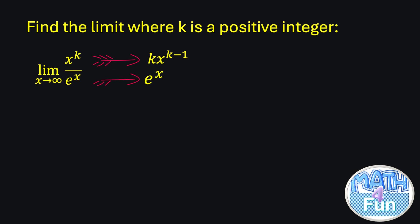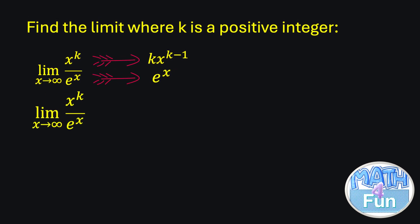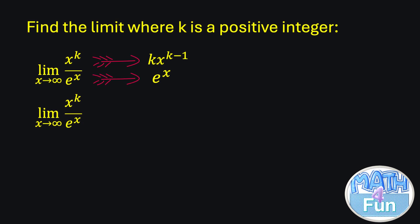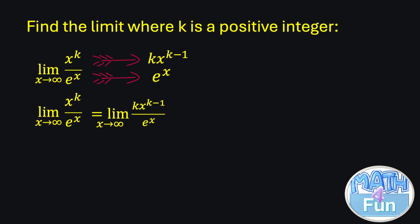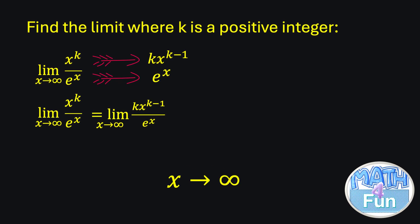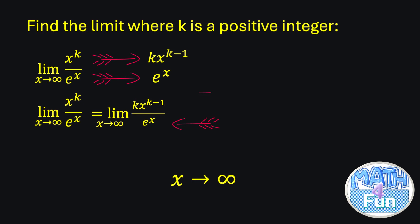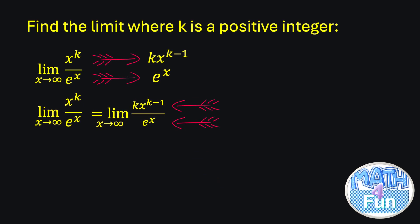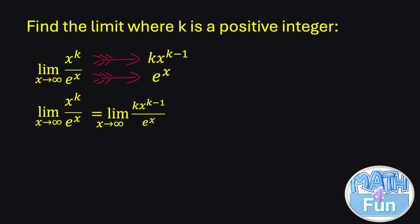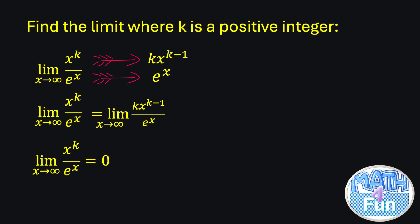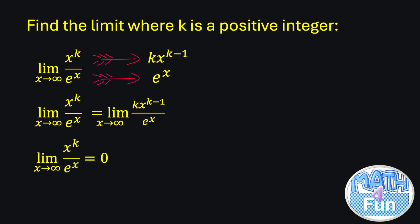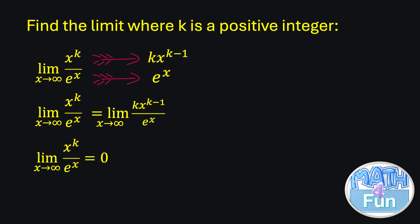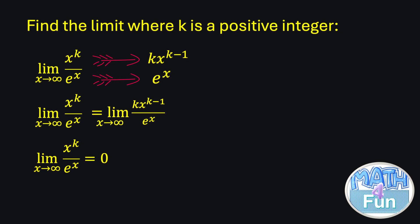So we can write: limit as x → +∞ of x^k / e^x equals limit as x → ∞ of k·x^(k−1) / e^x. As x approaches infinity, the denominator e^x grows much faster than x^(k−1) for any positive k, leading the limit to approach 0. Therefore, the limit as x approaches infinity of x^k / e^x equals 0.